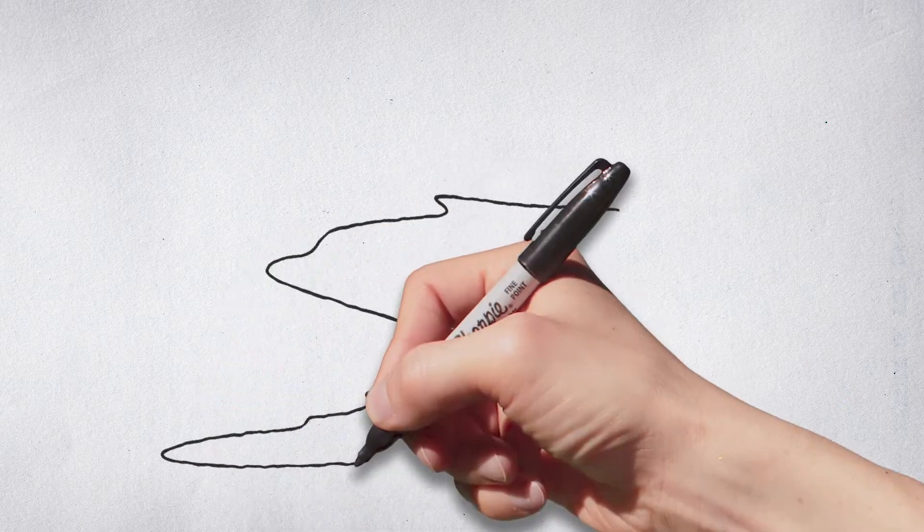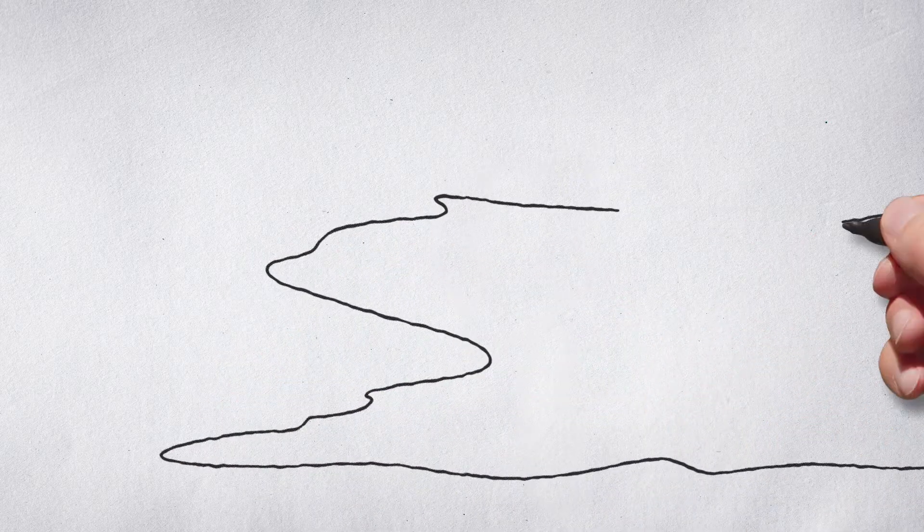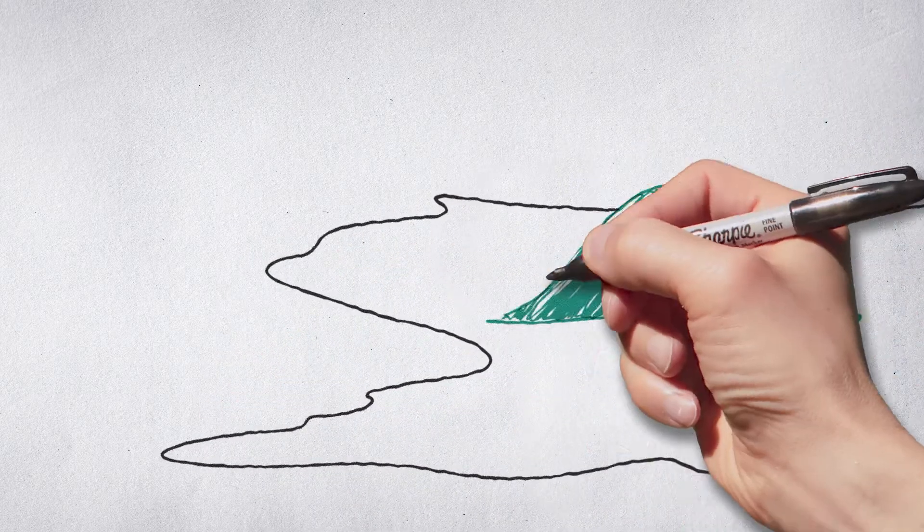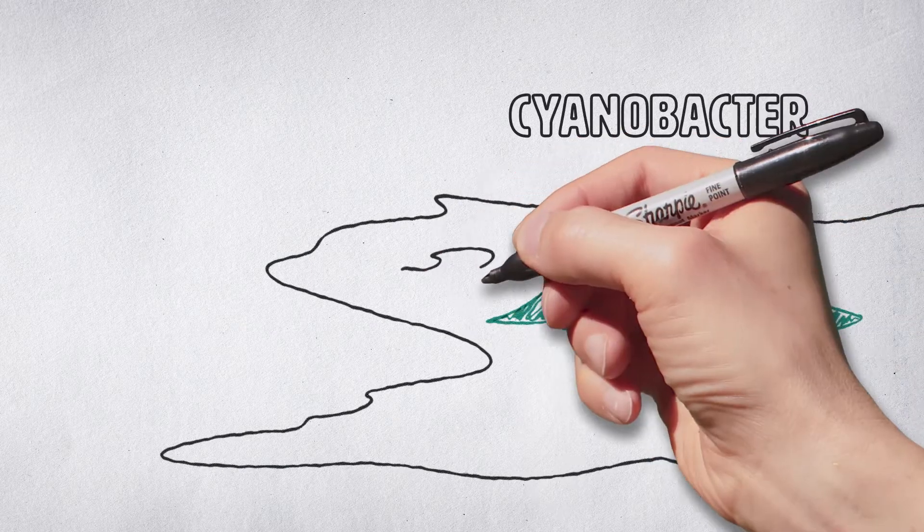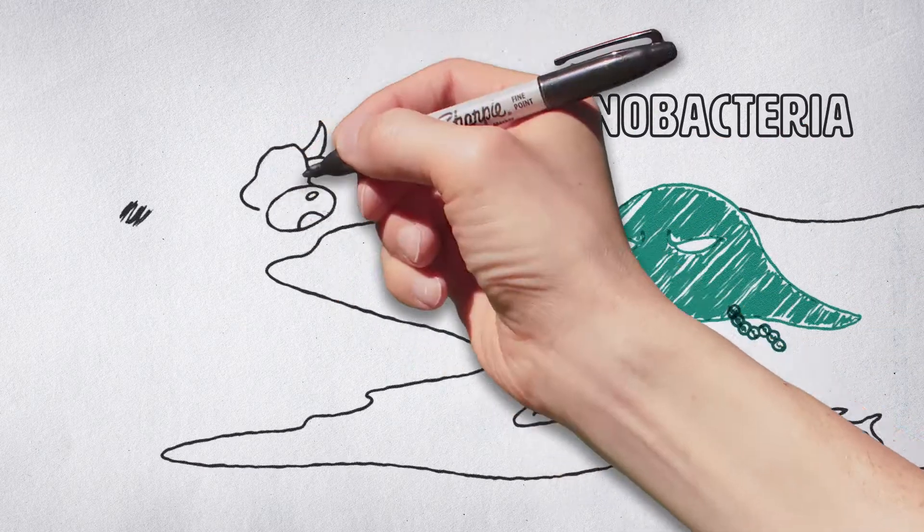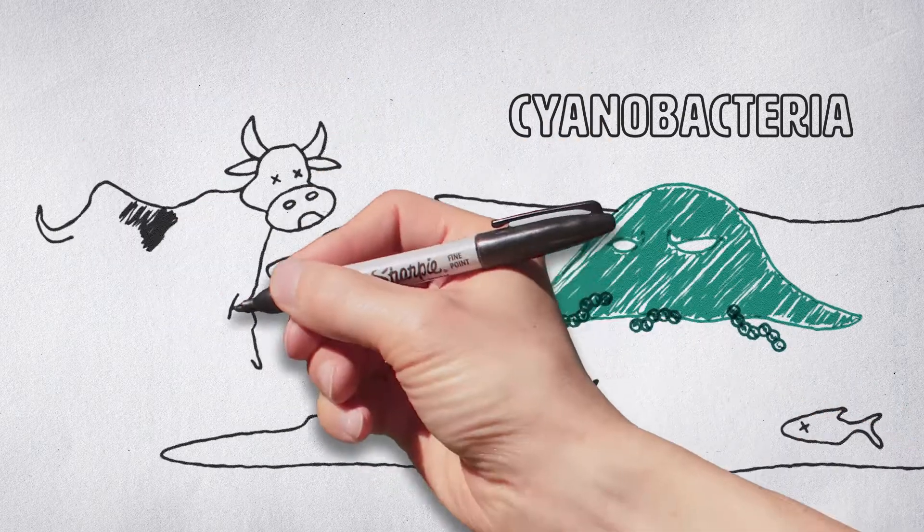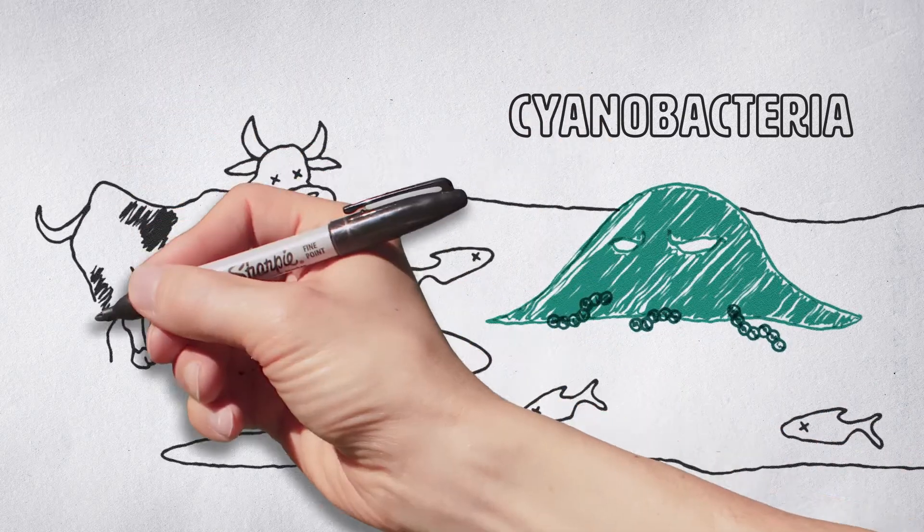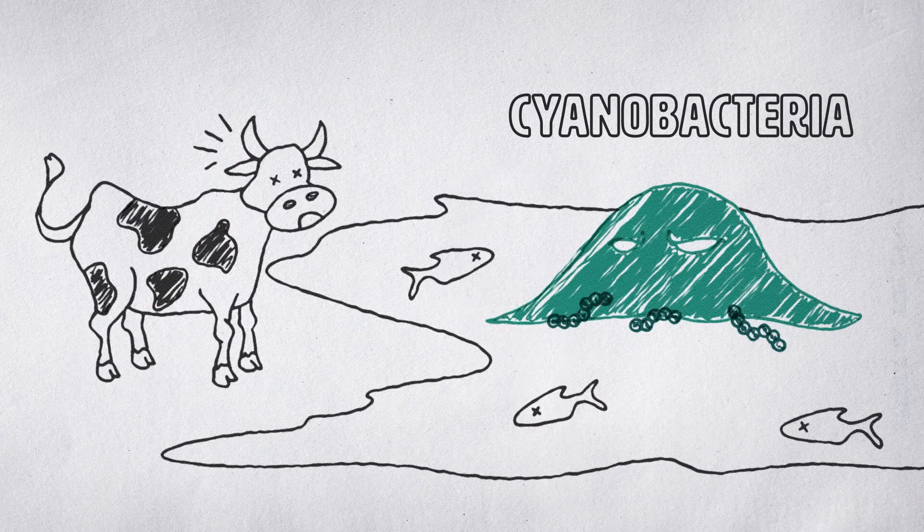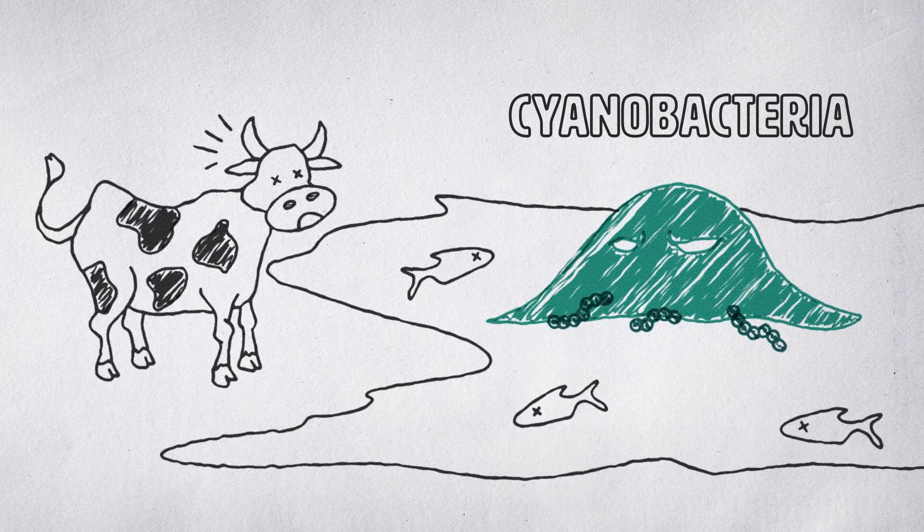While most algae are harmless, some types of cyanobacteria are not. Although commonly referred to as blue-green algae, cyanobacteria is actually a photosynthetic bacteria that lives in water. Cyanobacteria can produce toxins that can pose risk to livestock and cause public health issues for humans.